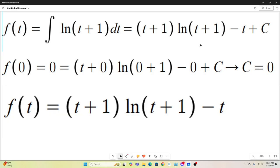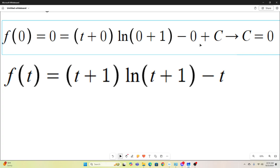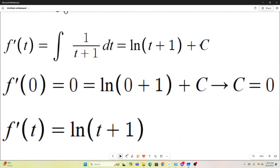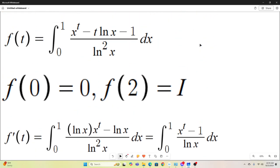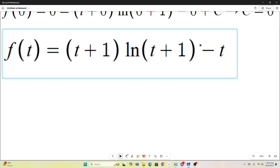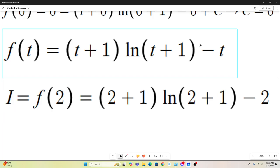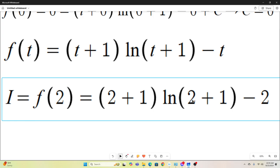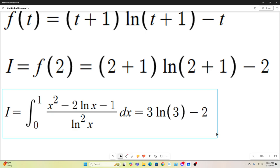So we have f of t is equal to t plus 1 natural log t plus 1 minus t. And now we're done. We just plug in 2 because, remember, we already determined that f of 2 is equal to our original integral. So we just now plug in 2 into that expression and we have our answer. I is equal to f of 2. We already knew that. That's equal to 2 plus 1 times the natural log of 2 plus 1 and then minus 2. So as our final answer, this is what we have. We have I is equal to this integral right here. And that evaluates to 3 natural log 3 minus 2.